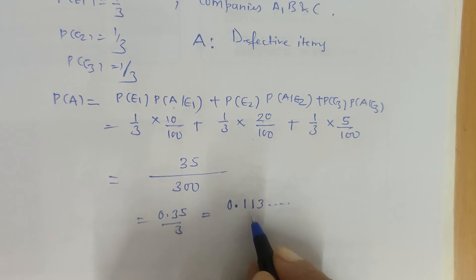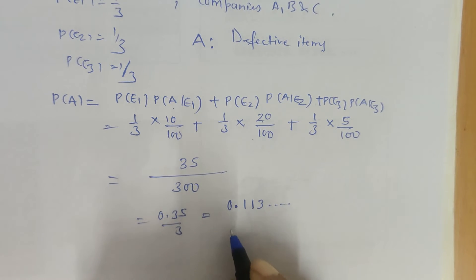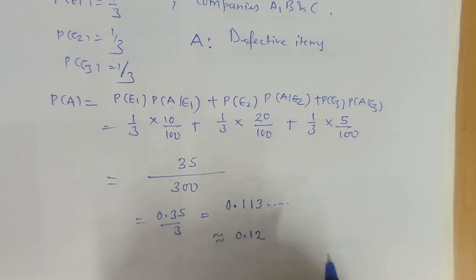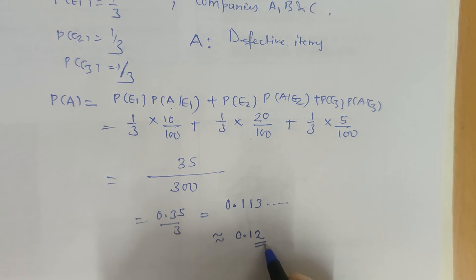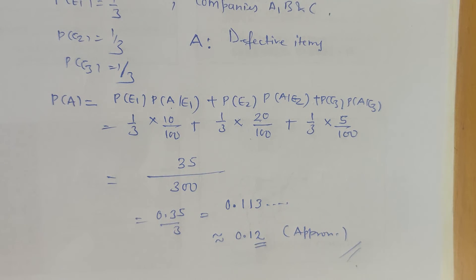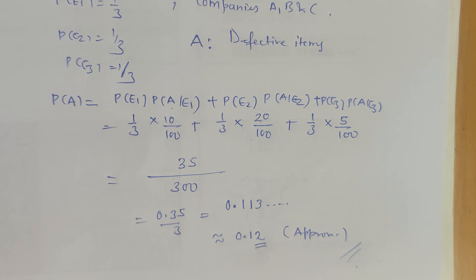So if you get any multiple choice question and the option 0.12 is present, approximately it will be closer to 0.12 out of the four options. This is how we solve any problem based on the theorem of total probability. Thank you.